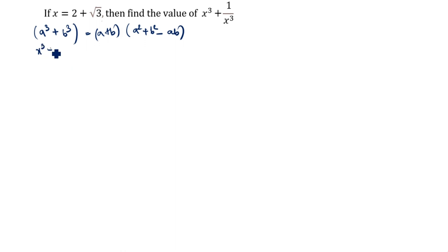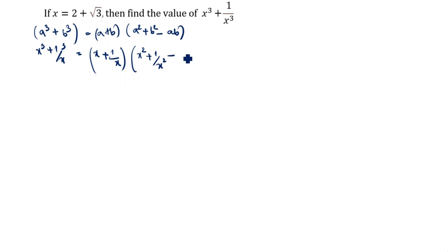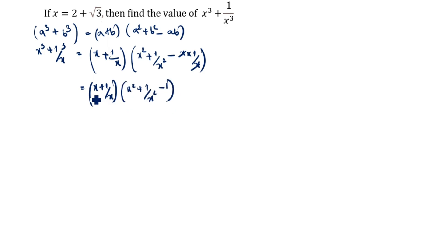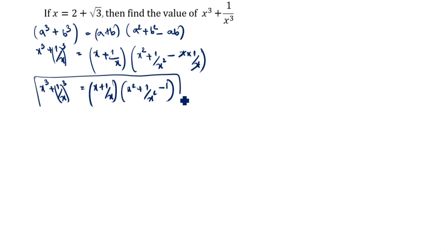Now x cube plus 1 by x cube: what is a? a is x. What is b? b is 1 by x. So a square is x square, b square is 1 by x square, minus x into 1 by x. x and x cancel, giving x plus 1 by x, times x square plus 1 by x square minus 1. This is the formula for x cube plus 1 by x cube.